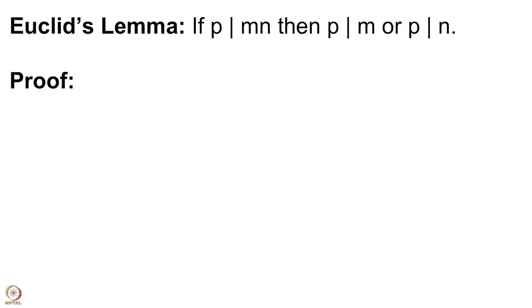Since we began this lecture course, we defined the prime number. Using primes we want to write every integer as a product of primes — this is the fundamental theorem of arithmetic. There is just one more step before we go to that theorem. This step is called a lemma. Mathematical statements have many names: theorem, proposition, lemma, corollary. Typically a lemma is something used in proving a big theorem.